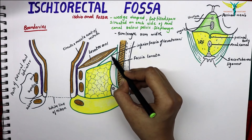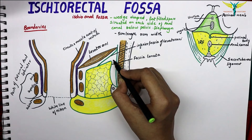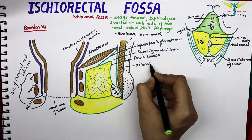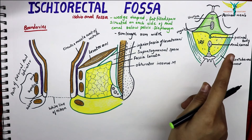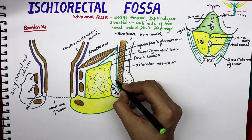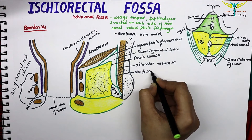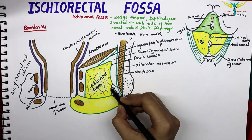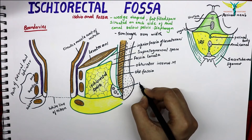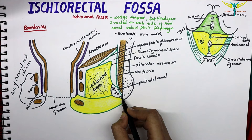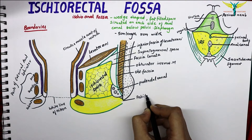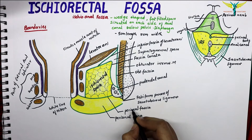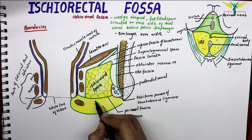This green color is the fascia lunata. The space present between these fascia is called the suprategmental space. This is the obturator internus muscle. This fascia that covers the muscle is the obturator fascia. This yellow color is the ischiorectal space. This canal is called the pudendal canal. This is the falciform process of the sacrotuberous ligament, the perineal fascia, the perianal space, and the perianal fascia — it also contains fat.